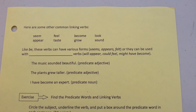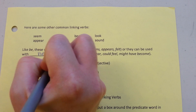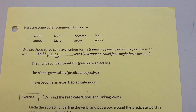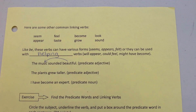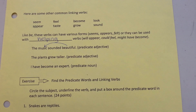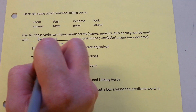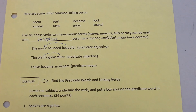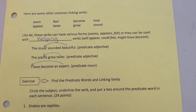Like "be," these verbs can have various forms — for example: seemed, appears, felt — or they can be used with helping verbs: will appear, could feel, might have become. Here are some examples: "The music sounded beautiful" — a predicate adjective. "The plant grew taller" — another predicate adjective. "I have become an expert" — a predicate noun.